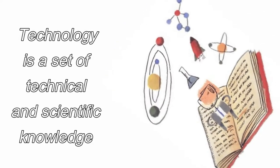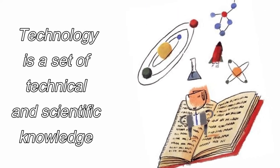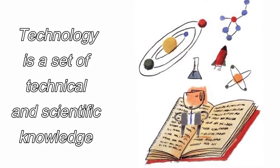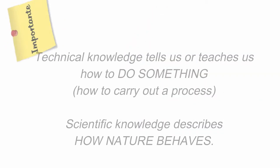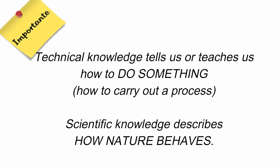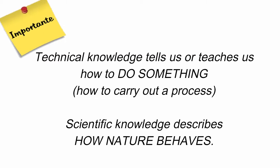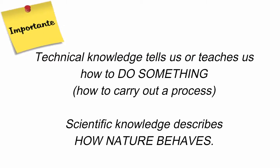We said that technology is a set of technical and scientific knowledge applied to create objects and improve our lives. Therefore, the first thing we have to do is distinguish between technical knowledge and scientific knowledge. Technical knowledge tells us how to do something, how to carry out a process, while scientific knowledge describes how nature behaves.